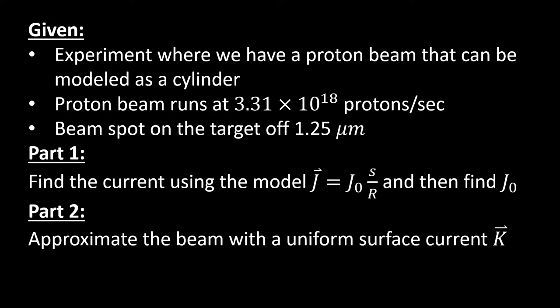So that's a way that we're going to be able to measure the radius of this thing. And so in the first part of this problem, we're going to find the current using the volume current density model J equals J₀ S divided by R, where J₀ is a constant.